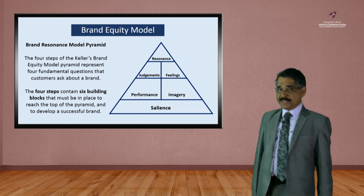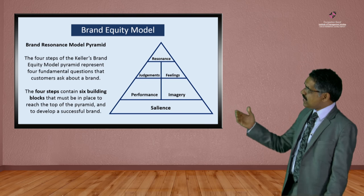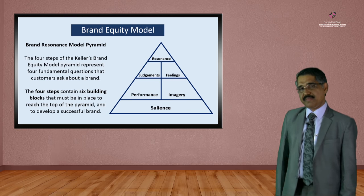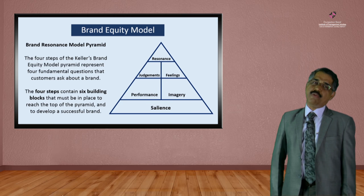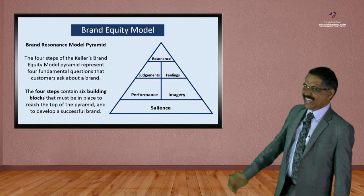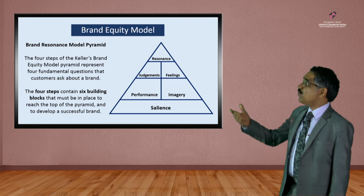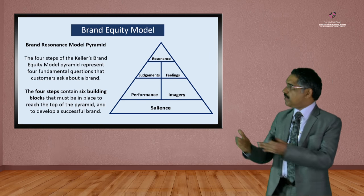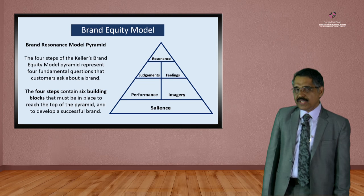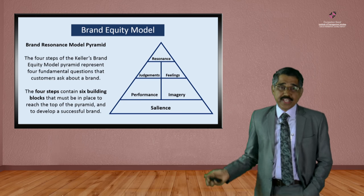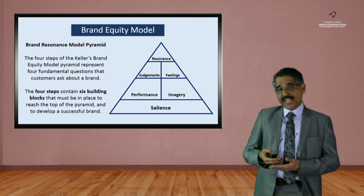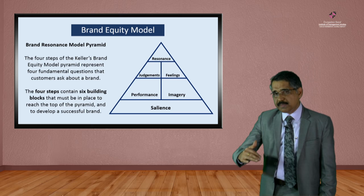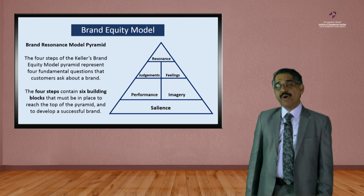Now let's move to the next model — built by one of the leading brand authorities, Keller. The name of this model is the Brand Resonance Model Pyramid. It has four levels starting from salience, then moving to performance and imagery, then judgment and feeling, and finally resonance. The four steps contain six building blocks that must be in place to reach the top of the pyramid and to develop a successful brand.